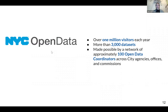Our open data site has over 3,000 datasets — that means billions of rows of data. It's managed by the NYC Open Data Team, housed at the NYC Office of Tech and Innovation. The information is possible thanks to a network of over 100 open data coordinators spread throughout city government. Any city agency, office, or commission, including elected officials, has an open data coordinator. These coordinators are responsible for working with the NYC Open Data Team to identify, structure, document, publish, update, and share their agency's open data datasets.